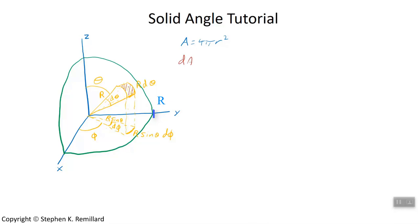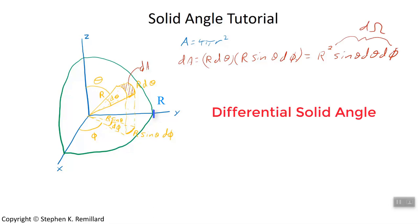I'll call it dA. dA is the area of a rectangle, so you have r d theta times the other length. And this product is the differential solid angle, so that I can say dA is just r squared times the differential solid angle, which is sine theta d theta d phi.